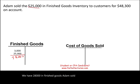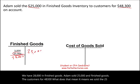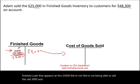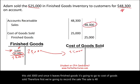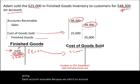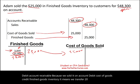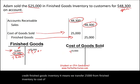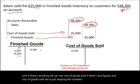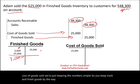Adam sold $25,000 in finished goods to customers for $48,300. We record the sale by debiting accounts receivable $48,300 and crediting sales revenue. We also debit cost of goods sold $25,000 and credit finished goods inventory $25,000, transferring the cost from finished goods to cost of goods sold. Finished goods now has a balance of $3,000.